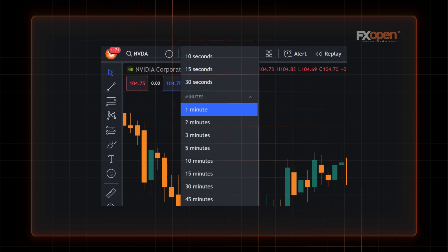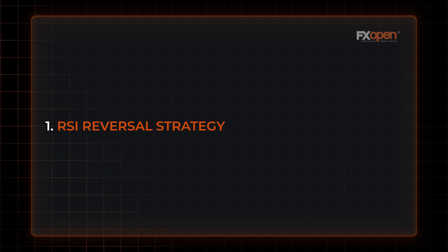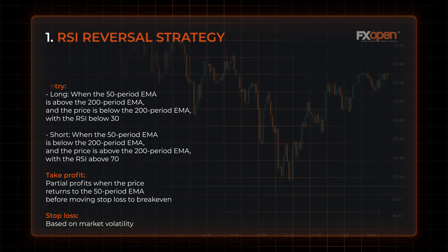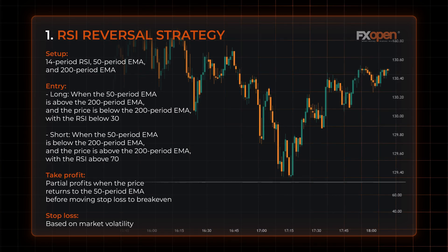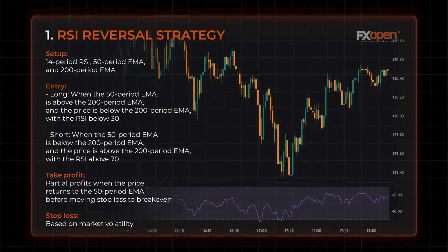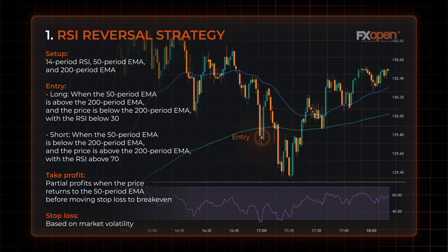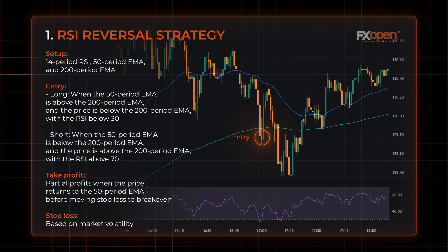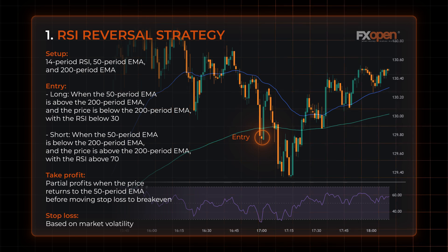Let's move to scalping strategies. Note that all strategies are used on one-minute charts but can be applied to higher time frames. The RSI Reversal Strategy makes use of the overbought and oversold zones of the Relative Strength Index and two Exponential Moving Averages to identify potential reversal points. Traders may go long when the 50-period EMA is above the 200-period EMA and the price is below the 200-period EMA with the RSI below 30.